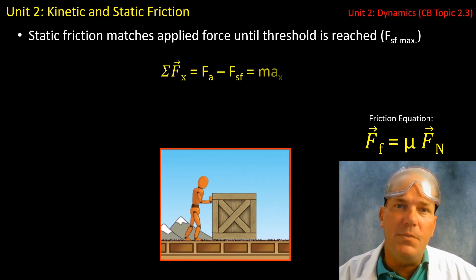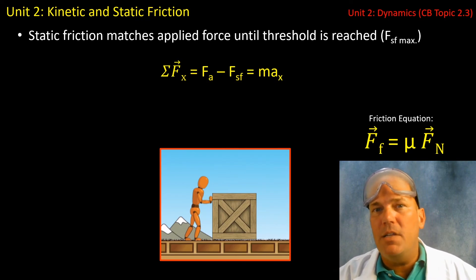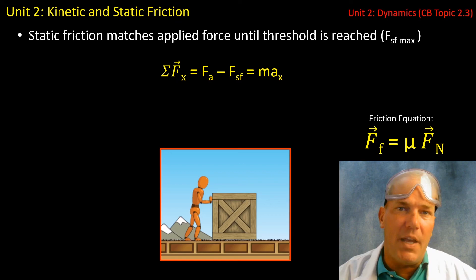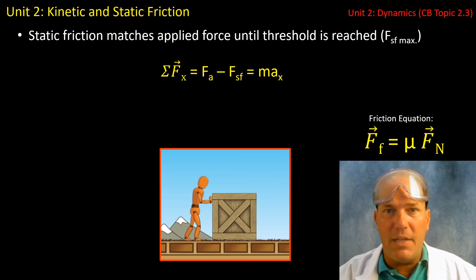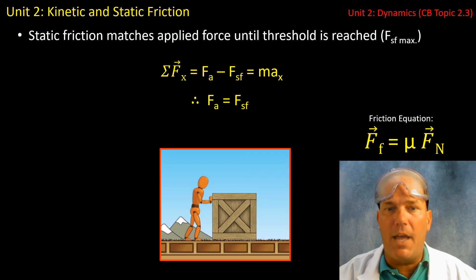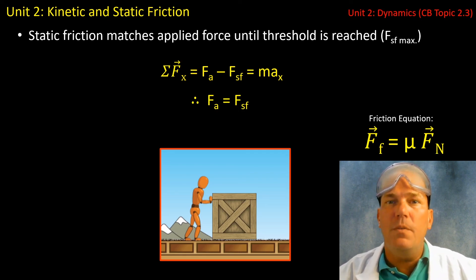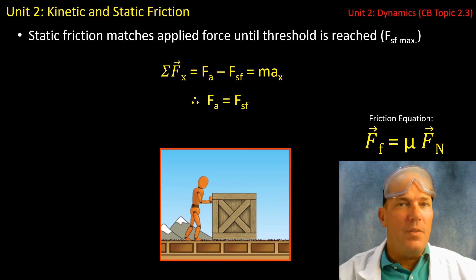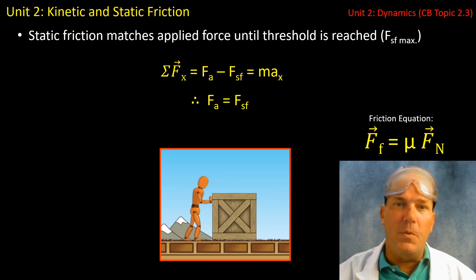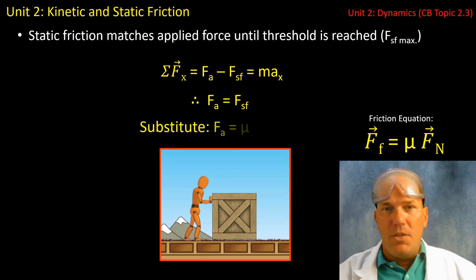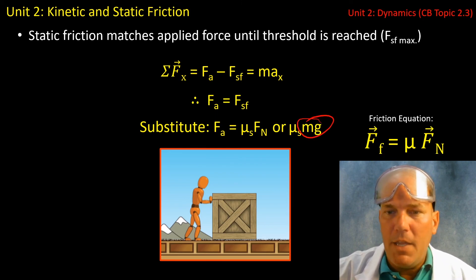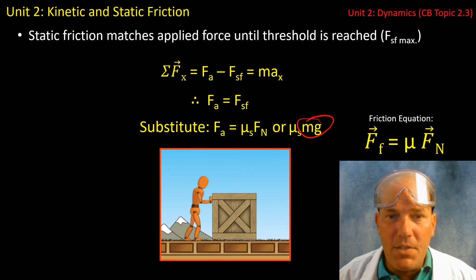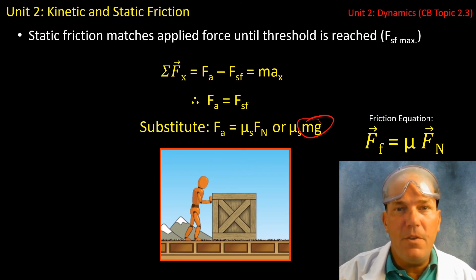Let us sum the forces for this scenario. Let's call right positive and left negative. So we're subtracting the force of static friction from the force applied, and of course the object was not accelerating. Therefore the right side of the expression becomes zero, and we can say that force applied was equal to the force of static friction — the force of static friction matched the force applied. You can always substitute in mass times gravity into the physics is fun equation — that is very important.